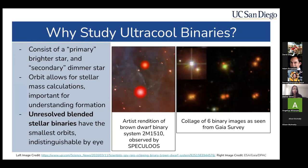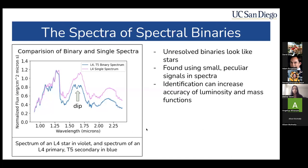So why study these ultracool binaries? Brown dwarfs can form in binaries — they consist of a primary brighter star and a secondary dimmer star. They allow for stellar mass calculations, which is very important for understanding how these stars and systems formed. Today we'll be looking specifically at unresolved blended stellar binaries, which have the smallest orbits and are indistinguishable by eye. The way we actually identify these types of binaries is by taking a look at their spectra.